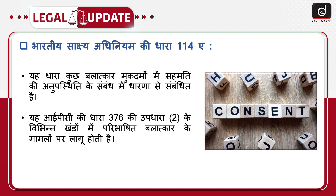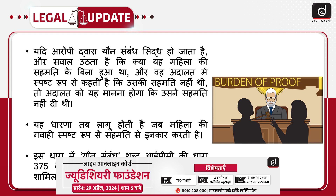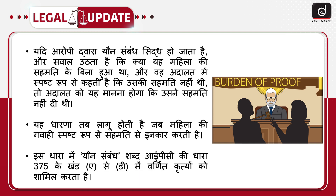Chalo jaante hain Bharatiya Sakshya Adhiniyam ki Dhara 114A ke baare mein. Yeh dhaaraa kuch balatkar muqadmon mein sehmati ki anupasthiti ke sambandh mein dhaaranaa se sambandhit hai. Yeh IPC ki Dhara 376 ki upadhaaraa 2 ke vibhinn khandon mein paribhaashit balatkar ke maamlon par laagu hoti hai. Yadi yon sambandh siddh ho jaata hai aur sawaal uthta hai ki kya yeh mahila ki sehmati ke bina hua tha, aur woh adalat mein spasht roop se kehti hai ki uski sehmati nahi thi, to adalat ko yeh maanna hoga ki usne sehmati nahi di thi. Yeh dhaaraa tab laagu hoti hai jab mahila ki gawaahi spasht roop se sehmati se inkaar karti hai. Is dhaaraa mein 'yon sambandh' shabd IPC ki Dhara 375 ke khand A se D mein varnit krityaon ko shaamil karta hai.